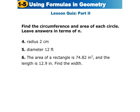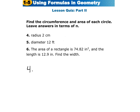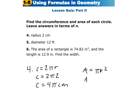Find the circumference and area of each circle, leaving answers in terms of pi. For circle 4 with a radius of 2 centimeters: the circumference is 2piR, so 2 times pi times 2 equals 4pi centimeters. The area is piR squared: pi times 2 squared equals 4pi centimeters squared.